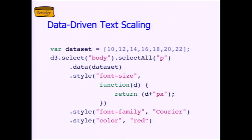Where we left off last time was kind of the payoff moment in D3 where we're going to be able to take data in the form of arrays of objects in JavaScript. We're going to be able to take elements of the DOM, which although it's a tree-shaped data structure, we can use selectors to pull out sets or subsets of it. And then we're going to take that set of data and that set of DOM elements and join them together — literally — in order to associate data to the DOM and use the data to drive the styling of the DOM.